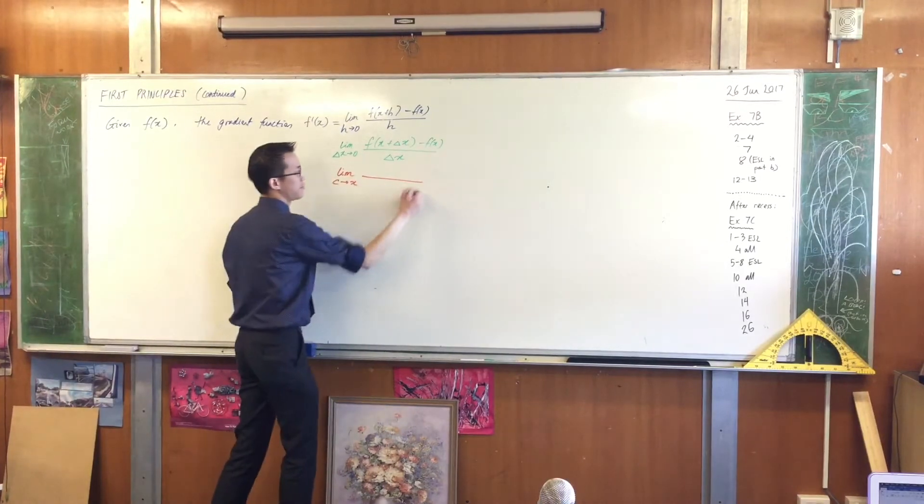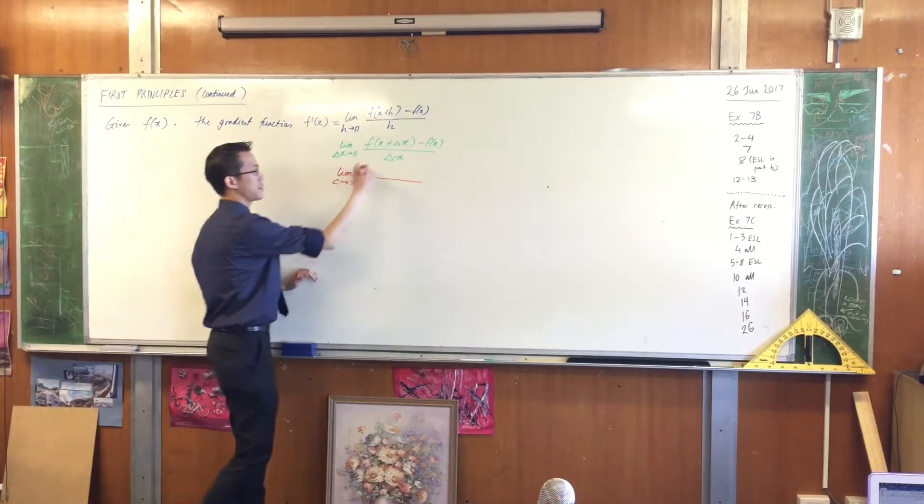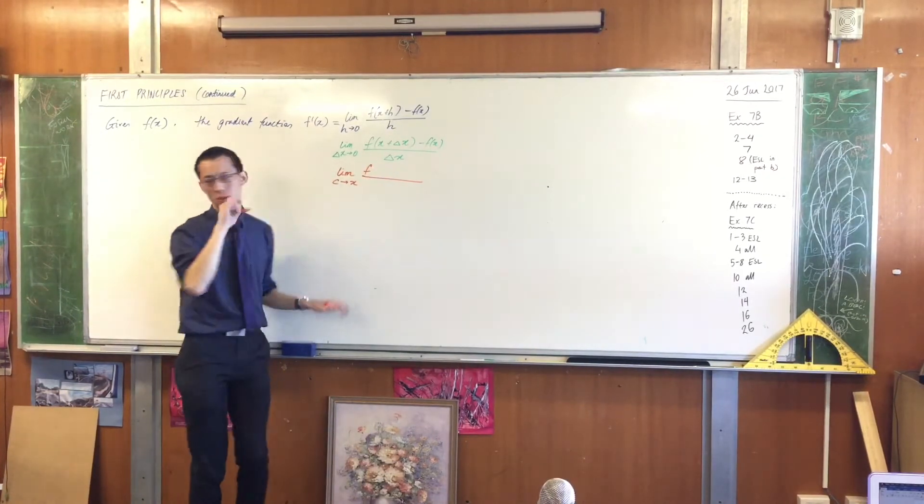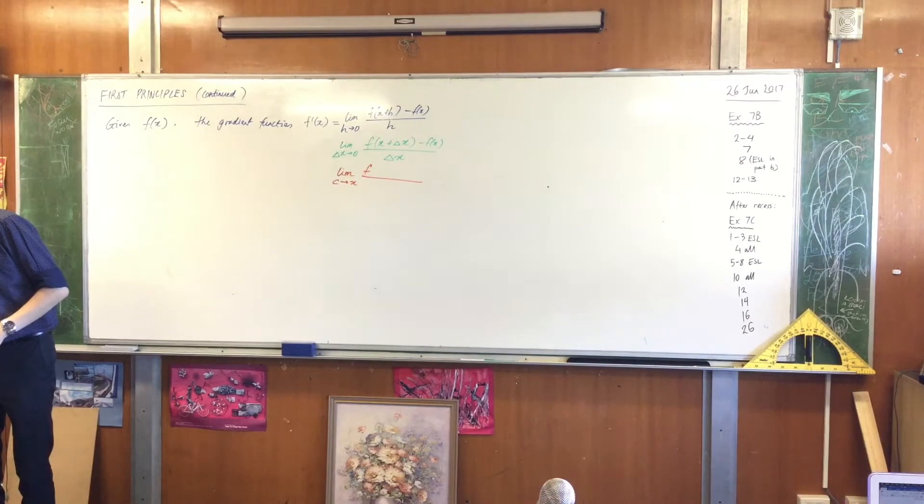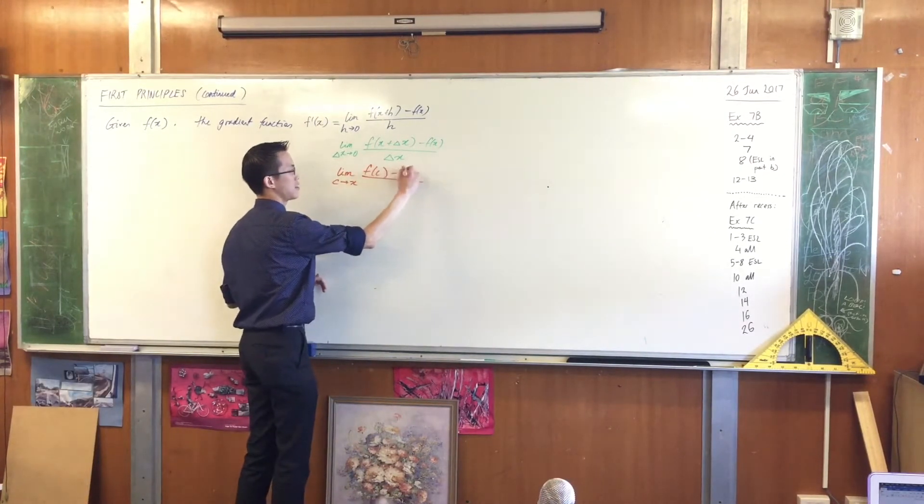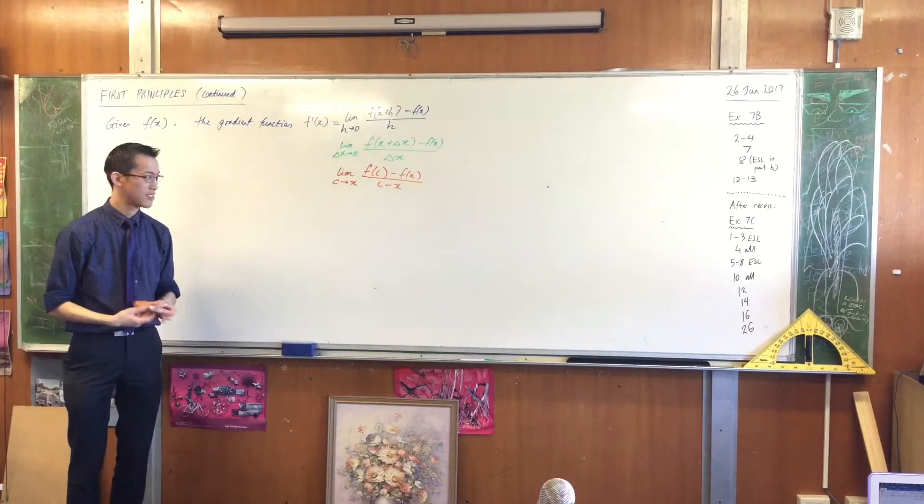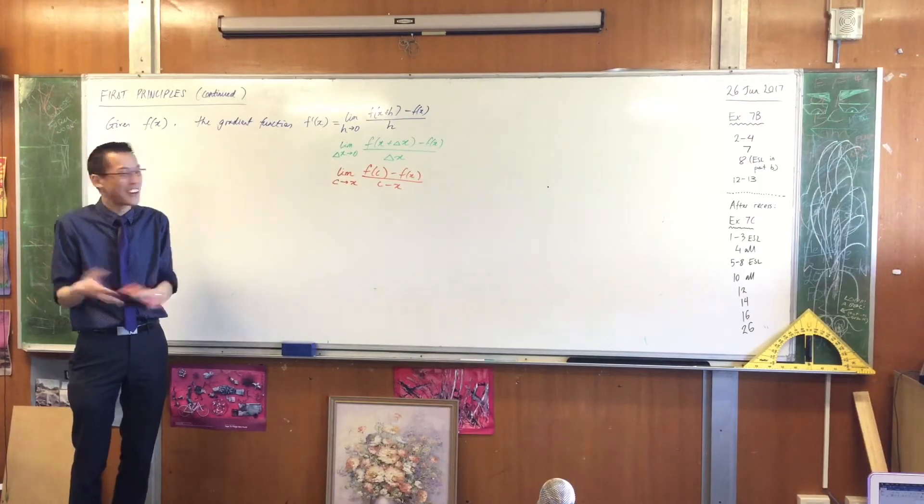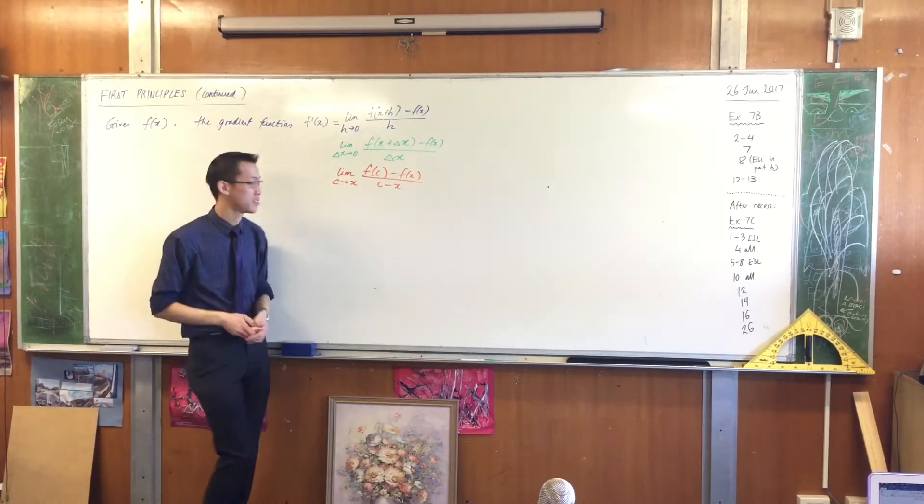What you get on the right hand side is exactly the same as what you had before, it's just still rise over run. Except instead it will be f of c minus f of x over c minus x. Can you see this is just the same thing? It's still rise over run, it's just two slightly different spots.